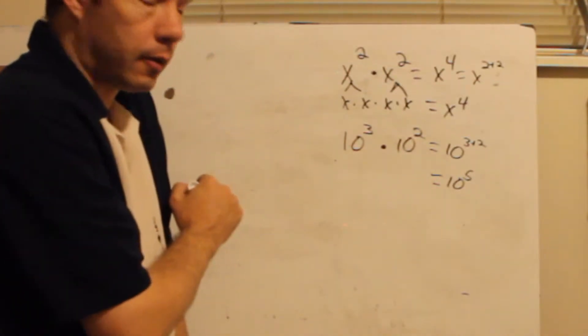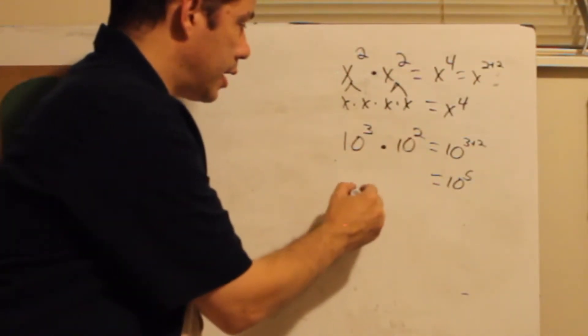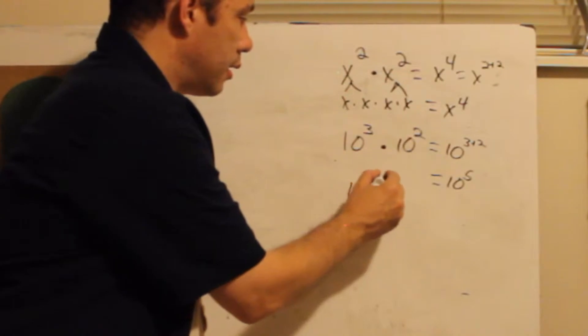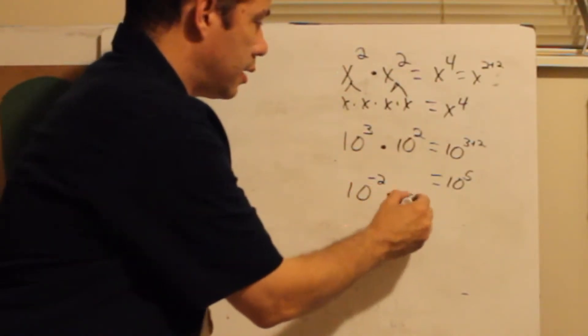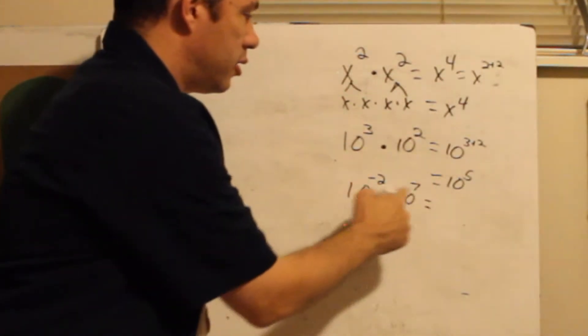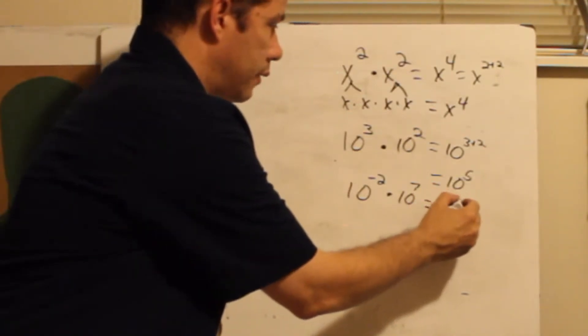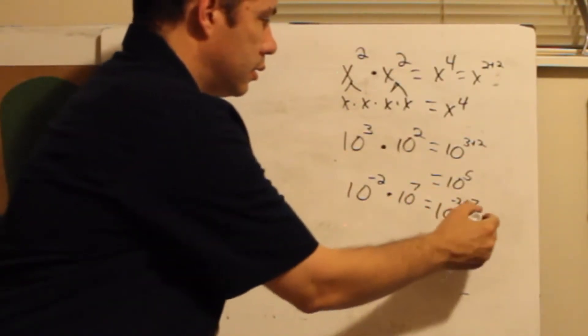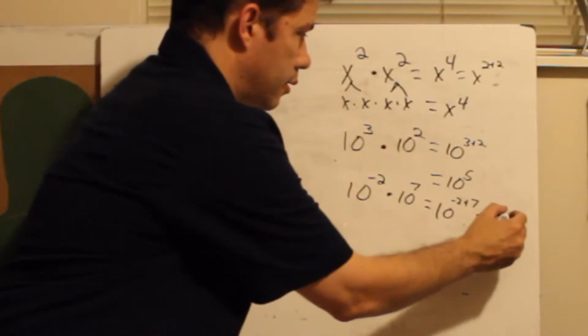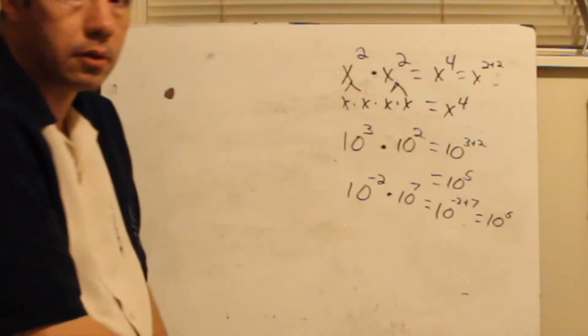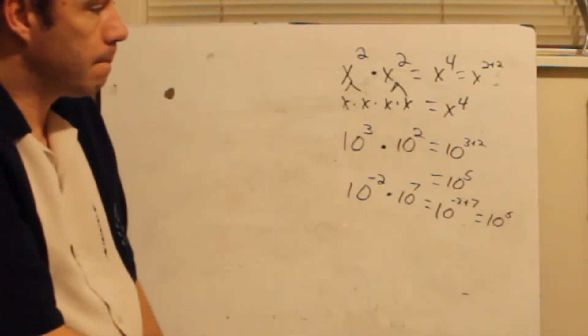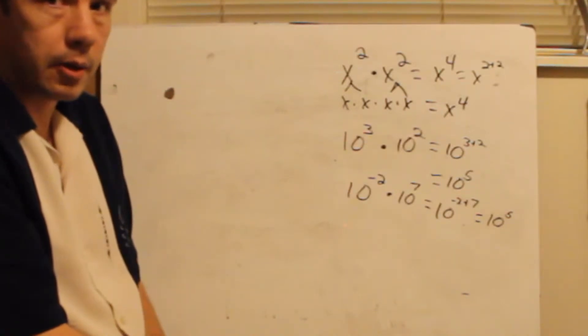What if they're negative? What if it's 10 to the negative 2 times 10 to the seventh? You still add them. So 10 and negative 2 plus 7 is equal to 10 to the fifth. Pretty simple.